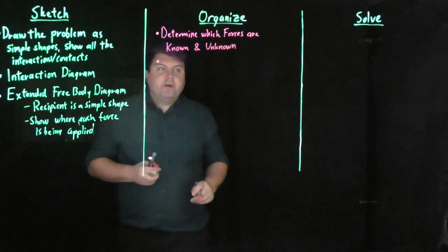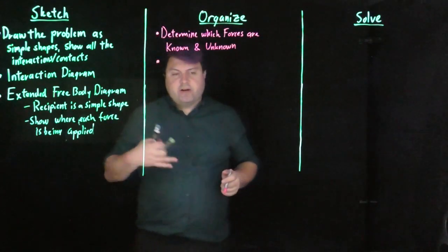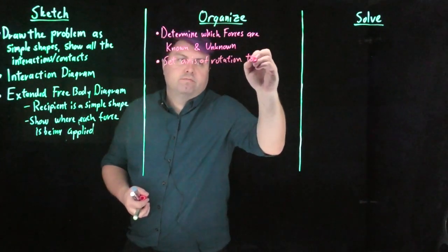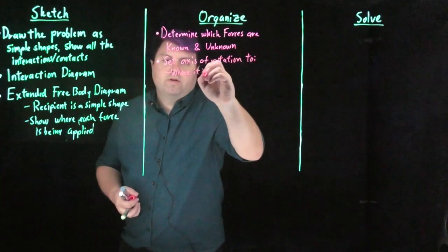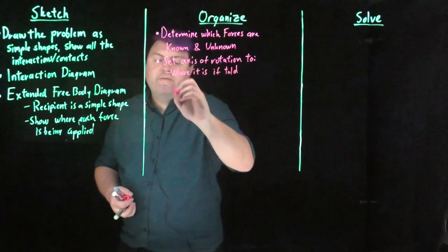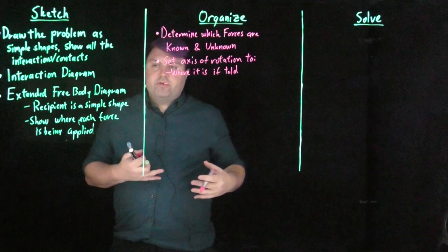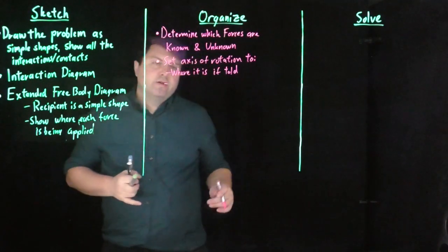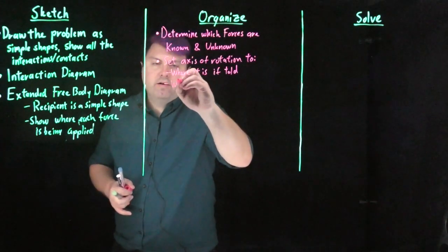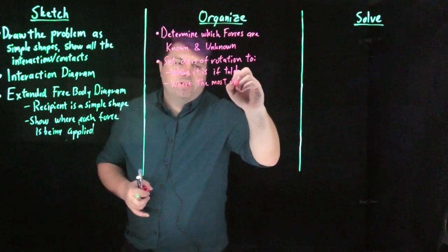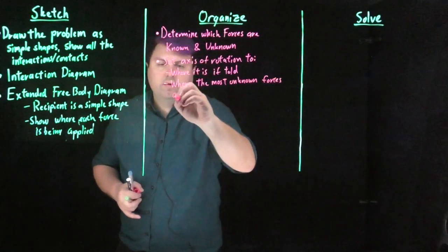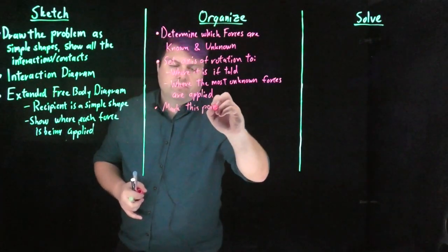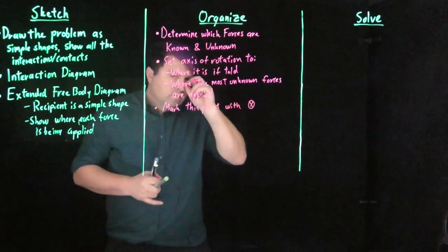And then if we're in static equilibrium, we can set our axis to anywhere. If we're told the axis, we want to set our axis of rotation to where we're told. So we're going to set it to where it is if it's told, and if it's not, which is going to be the majority of it because we've got static equilibrium problems, we get to choose. And if we choose a place where we have an unknown force being applied, then that force will still be unknown, but the torque will be zero because the distance will be zero. So, what we usually want to do is write where the most unknown forces are applied.